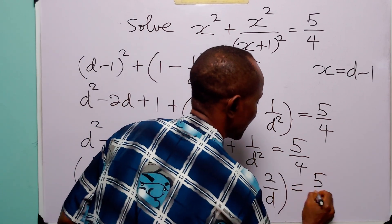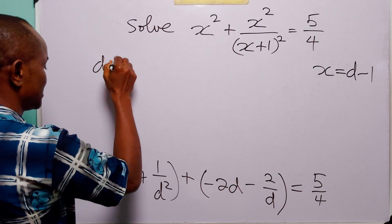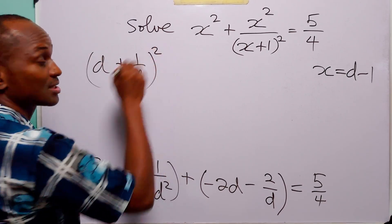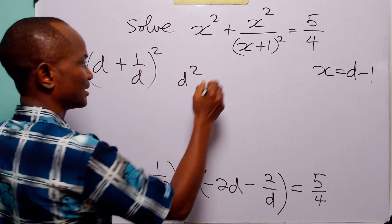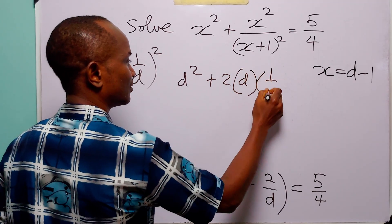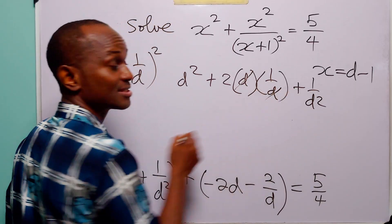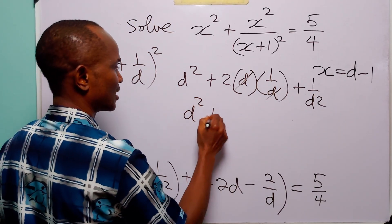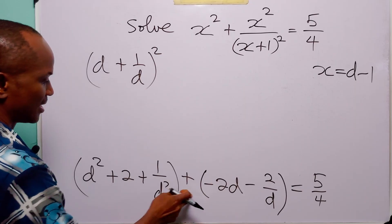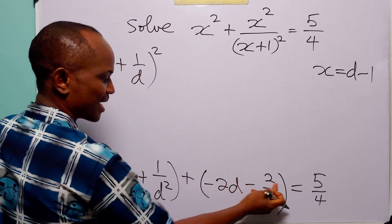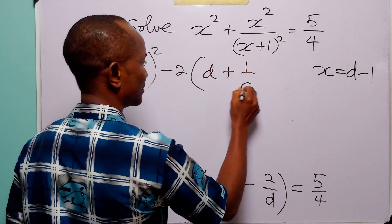Now let us look at this group of terms. d squared plus 2 plus 1 over d squared is equal to d plus 1 over d, all squared. Because when we expand that we get d squared, plus 2 times d times 1 over d which is 2, plus 1 over d squared — exactly what we have. We can also factorize minus 2 out of the remaining terms, giving us minus 2 times d plus 1 over d.